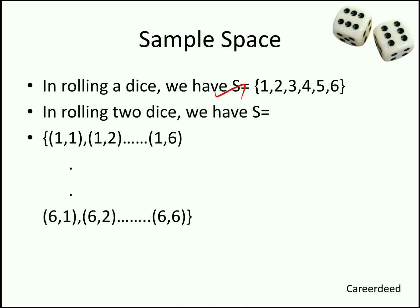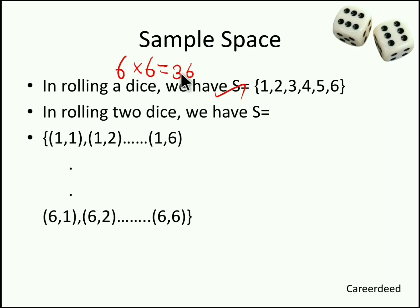While rolling 2 dice, the total sample space is 6 × 6. In a single die you have 6 faces, so in 2 dice you get 6 × 6 — totally 36 combinations, from (1,1) to (6,6). So the total sample space while rolling 2 dice is 36.